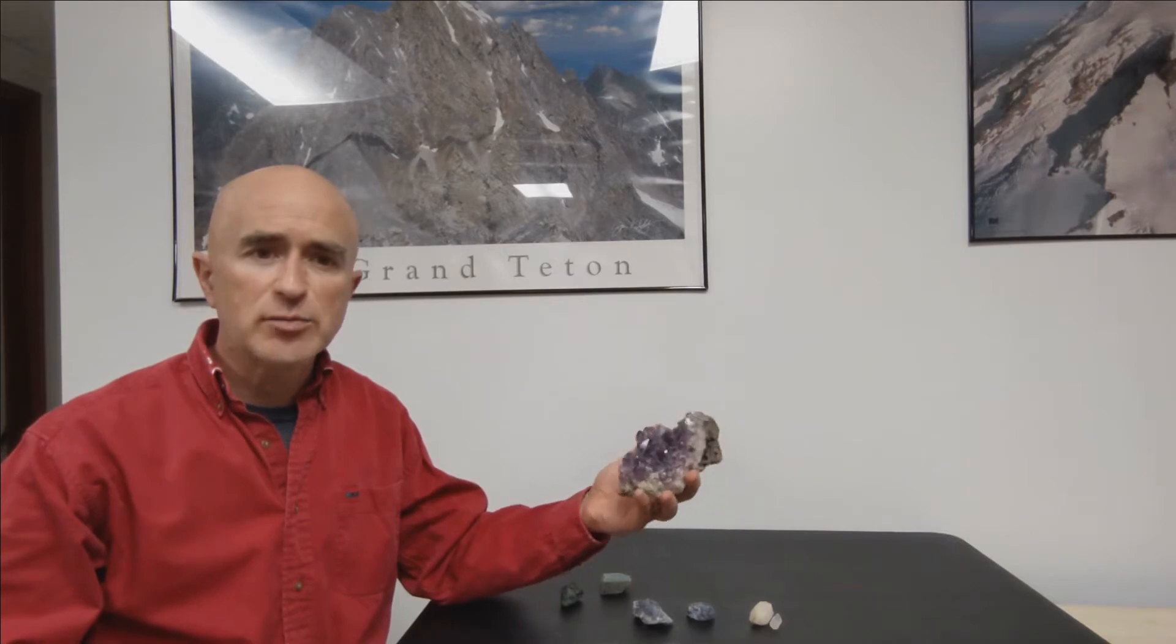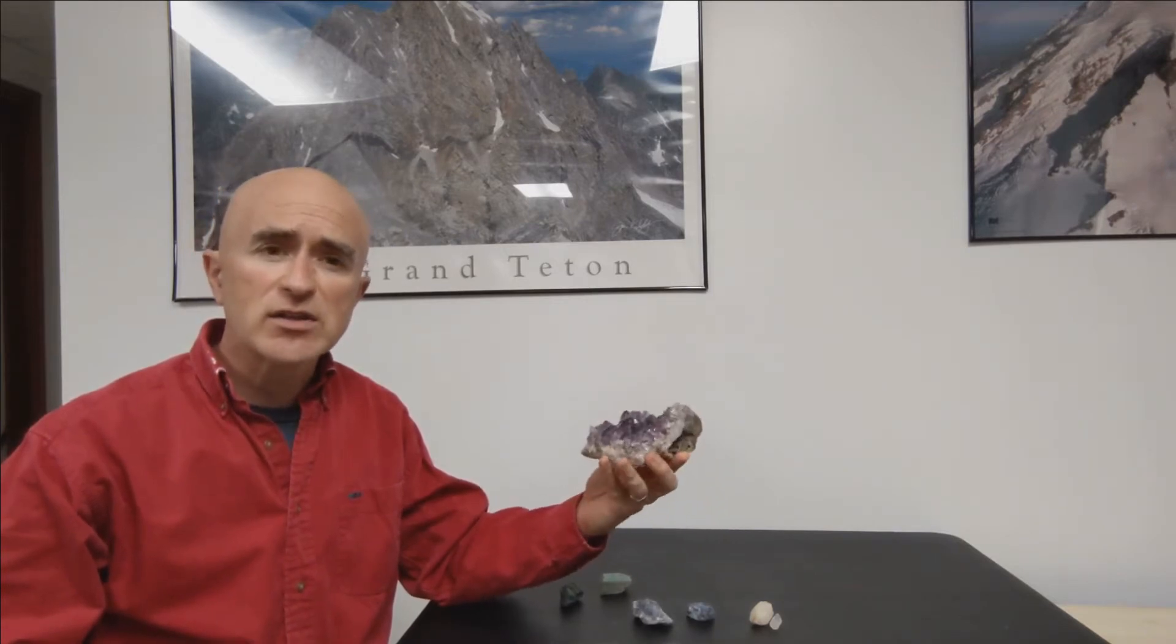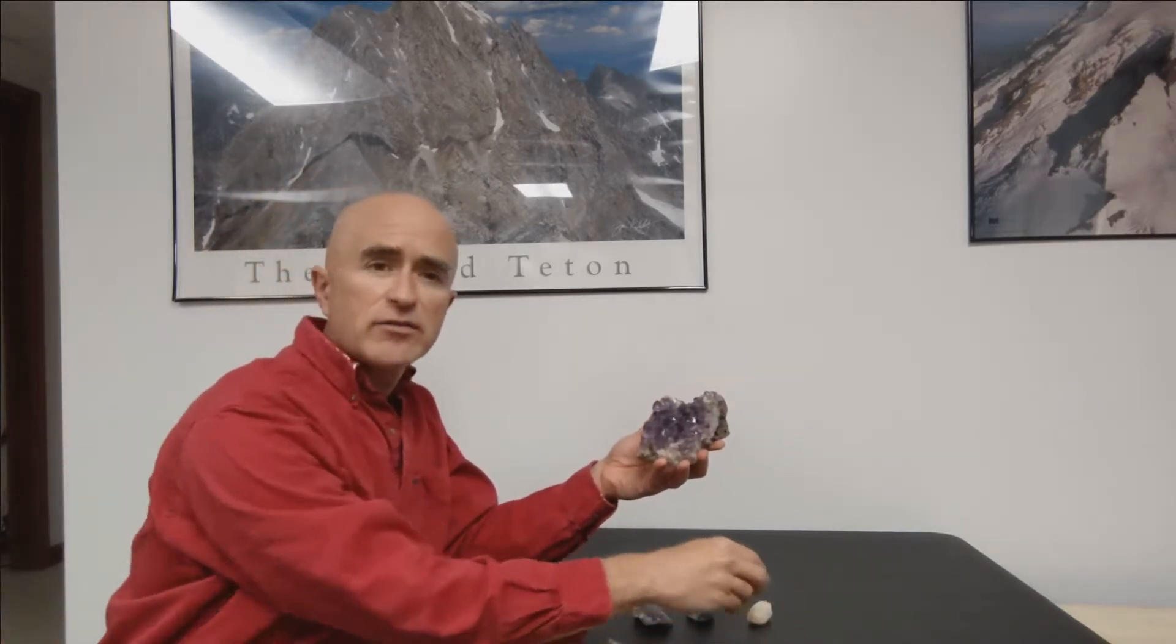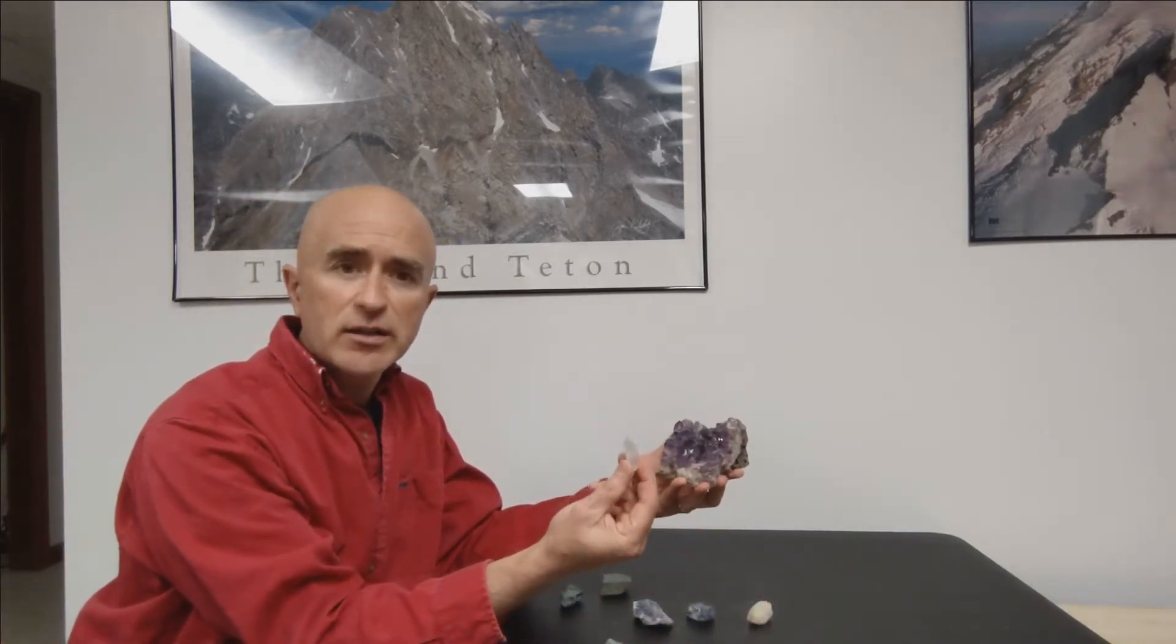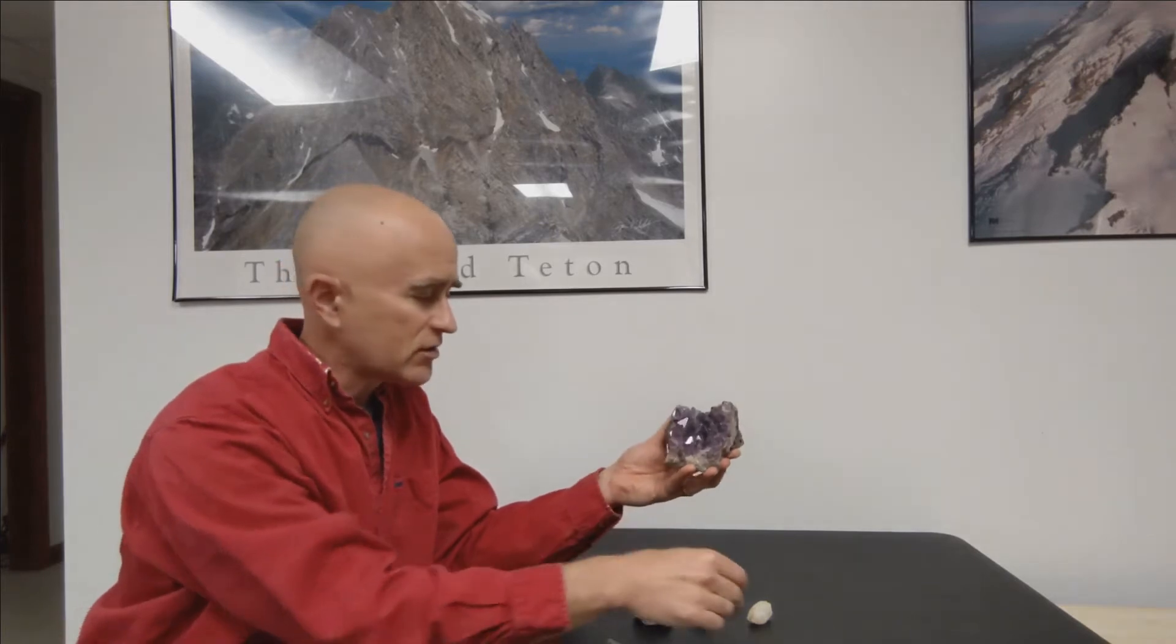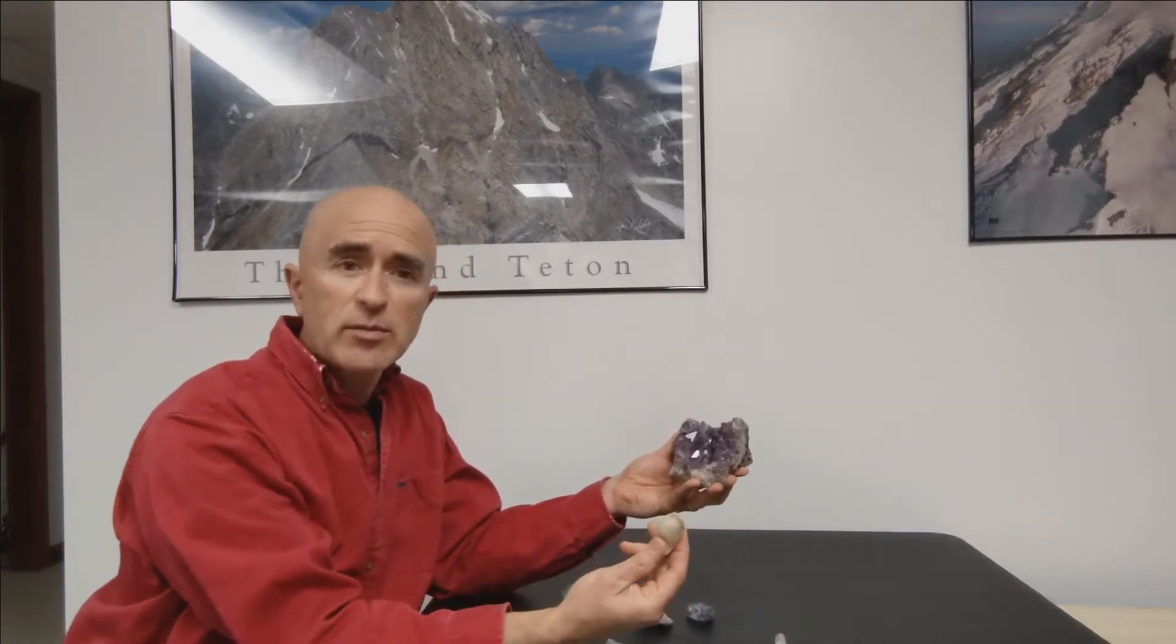We can take a look at something like this beautiful purple amethyst. Keep in mind though, that amethyst is a variety of quartz. Quartz comes in a variety of different colors. It may be clear, such as this small individual crystal, or sometimes it may be white or orange or a number of other colors.